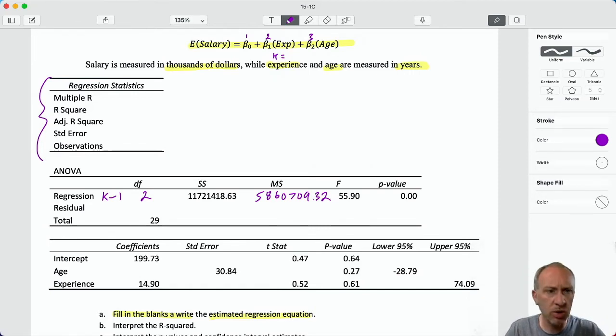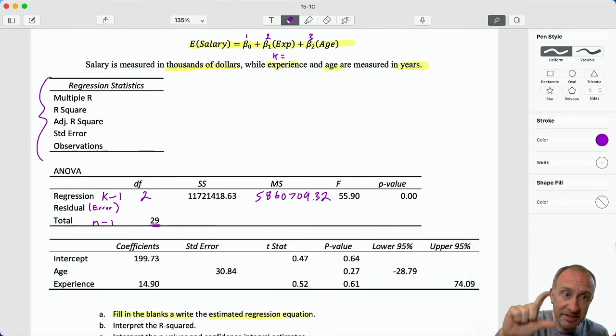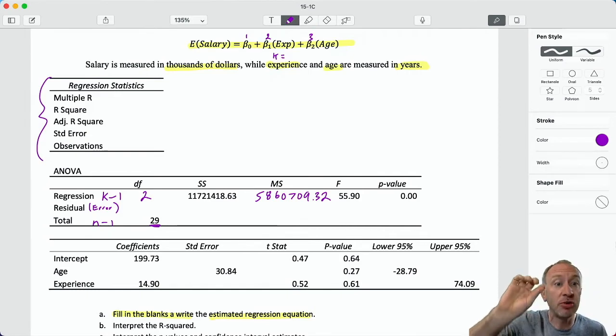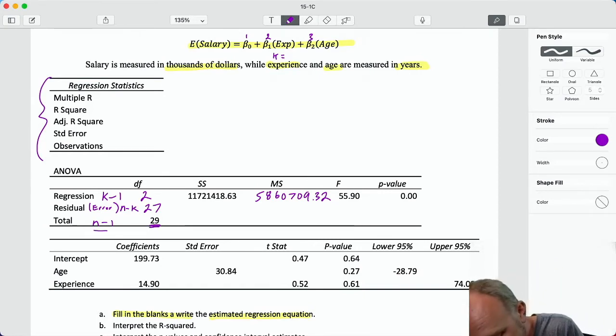I could go to the next row. I can figure out what residual is because I have degrees of freedom total is 29, and of course that's n minus one. My degrees of freedom for total, 29, must also equal to the sum of everything above it. What plus two is going to be equal to 29? This must be 27, the n minus K. So 27 plus two is 29. If n minus one is 29, my observations must be 30.